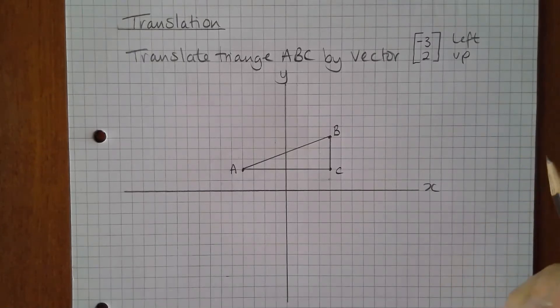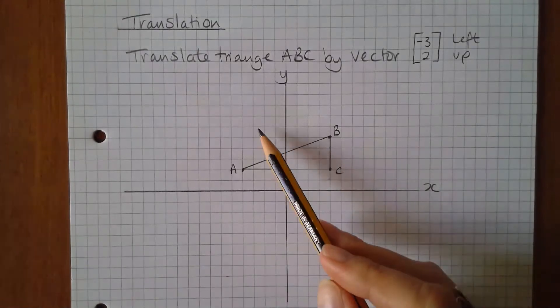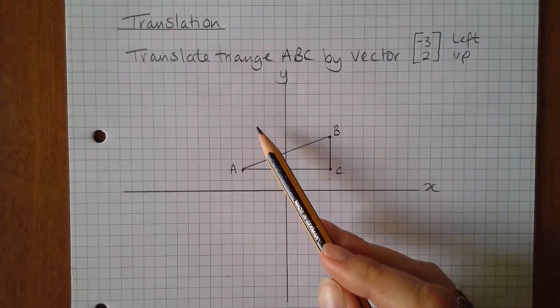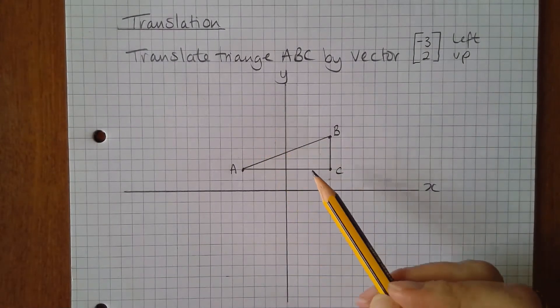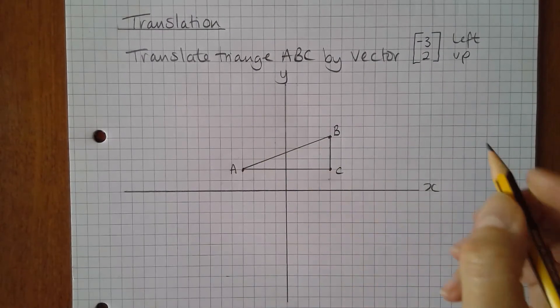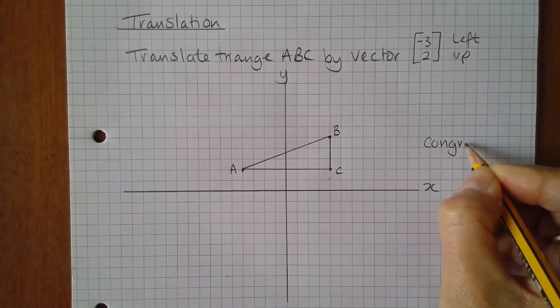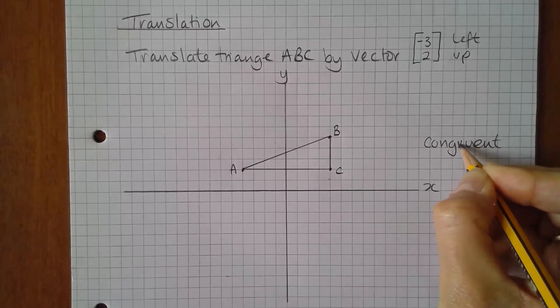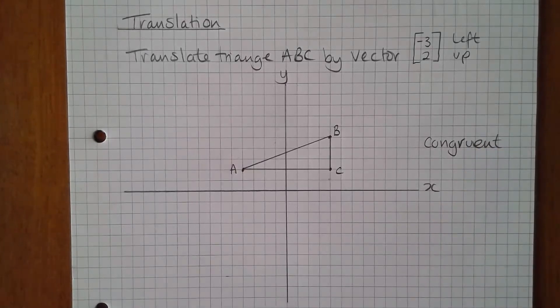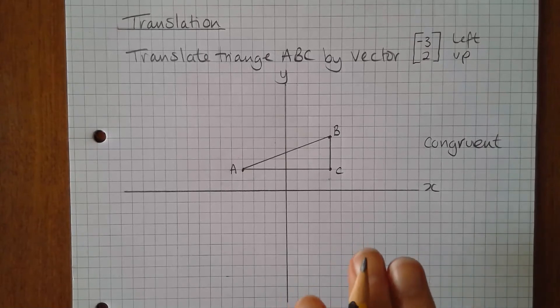So when we translate something, the image after it's been translated, the new shape, looks exactly the same as the object. So they are congruent, meaning the shapes are exactly the same shape and the same size. And also it will be in the same orientation so it won't have turned.